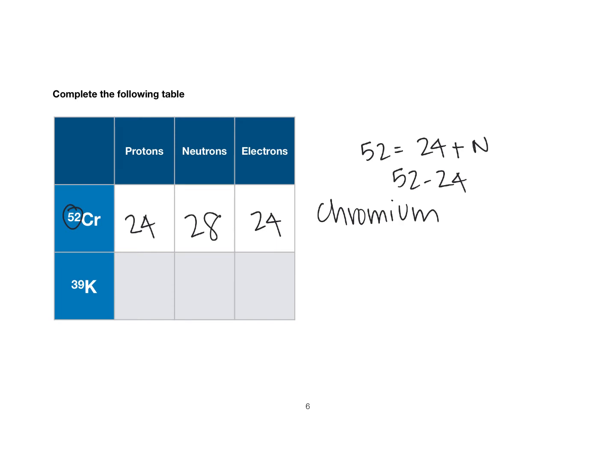For potassium, it's element 19, so it has 19 protons and 19 electrons. The number of neutrons is 39 minus 19, which gives you 20. You need the mass number in order to figure out the number of neutrons, or you can figure out the neutrons by knowing the protons and the mass number.